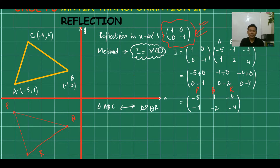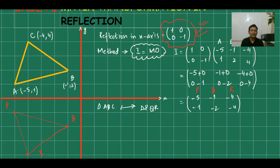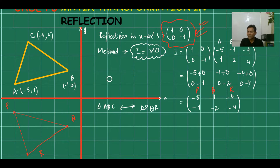Now I'm going to discuss how we can find these matrices. There are just four matrices in reflection: x-axis, y-axis, y = x, and y = −x. That's it — we don't need any other matrices in reflection. You can use any of these four matrices to get the reflection.